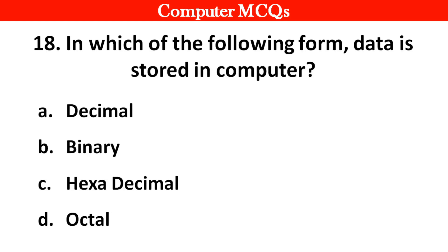Next question. In which of the following forms is data stored in a computer? Options A: Decimal, B: Binary, C: Hexadecimal, D: Octal. Right answer is option B: Binary.